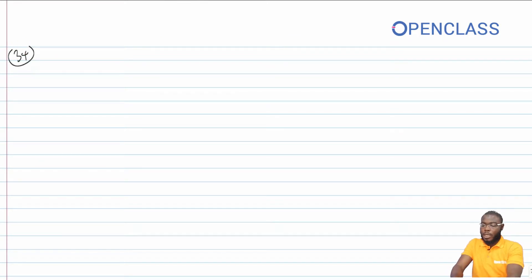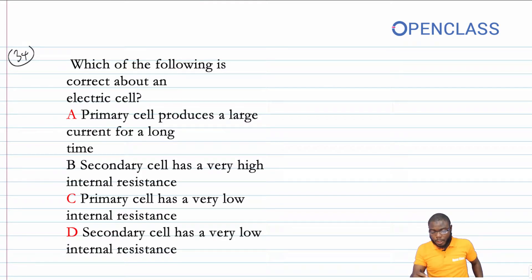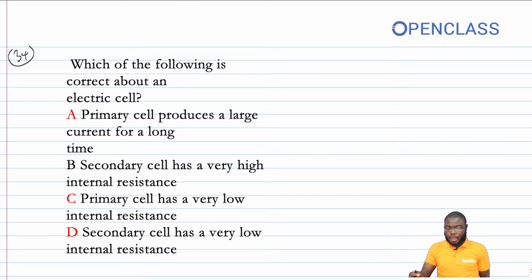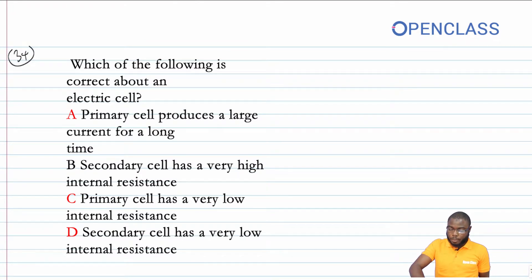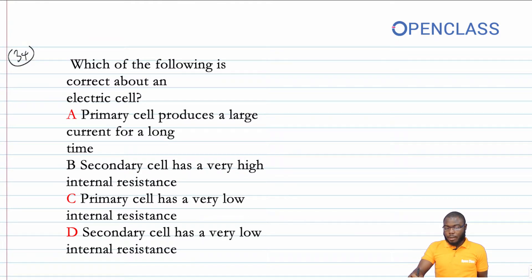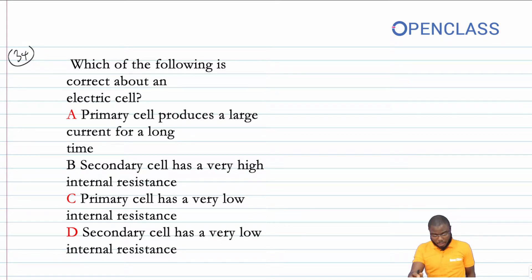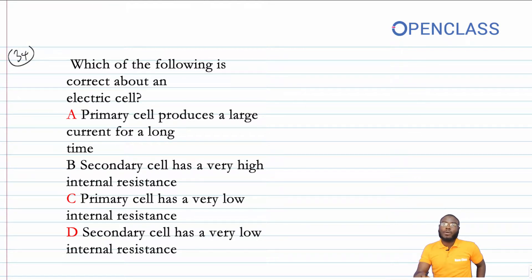Question 34 asks: which of the following is correct about an electric cell? The options are: A) primary cells produce a large current for a long time; B) secondary cells have very high internal resistance; C) primary cells have very low internal resistance; D) secondary cells have very low internal resistance.